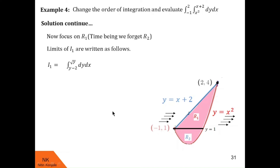Now for the outside integral limits of i1, we throw arrows parallel to the y-axis from bottom to top. These arrows enter the region by crossing y = 1, so y = 1 is the lower limit of the outside integral of i1. While leaving the region, the last boundary point has y-coordinate 4, so y = 4 is the upper limit. So i1's outside integral has limits 1 to 4.